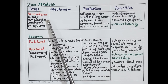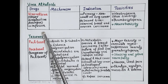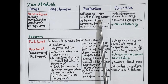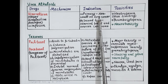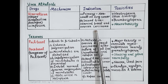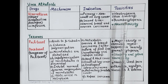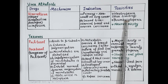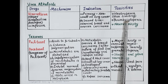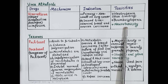Vinorelbine is a newer analog of vinblastine. It is primarily used in non-small cell lung cancer and is a second-line drug for the treatment of advanced breast and ovarian carcinoma. It causes neutropenia, and the severity of neutropenia increases with increasing dose. It also causes thrombocytopenia and neurotoxicity.